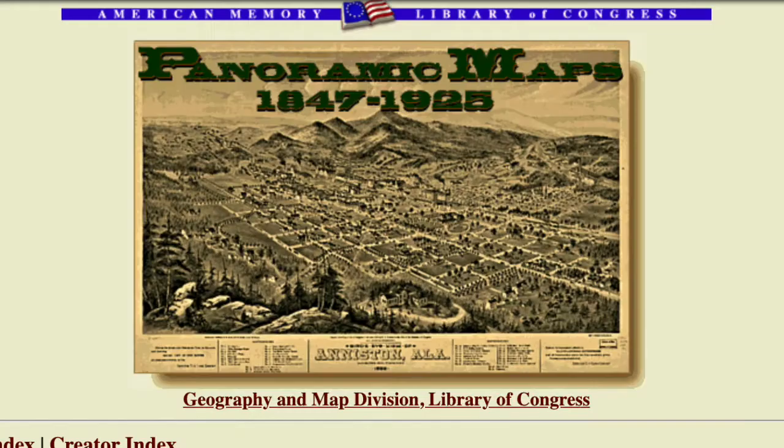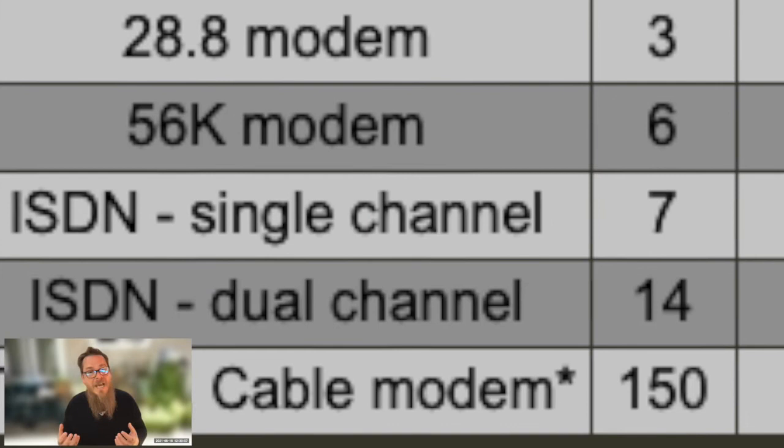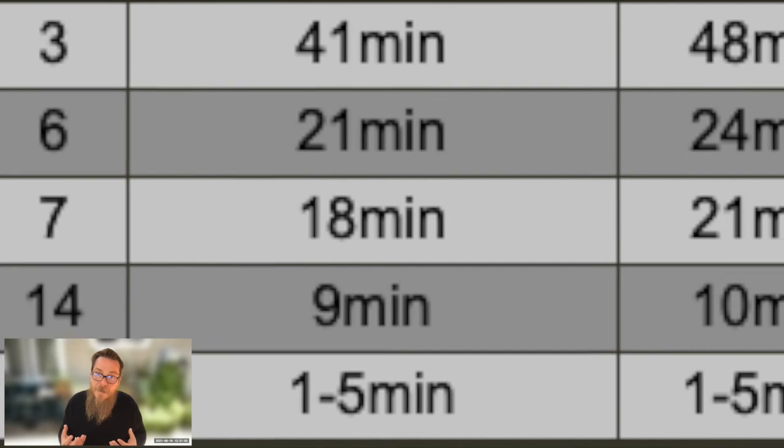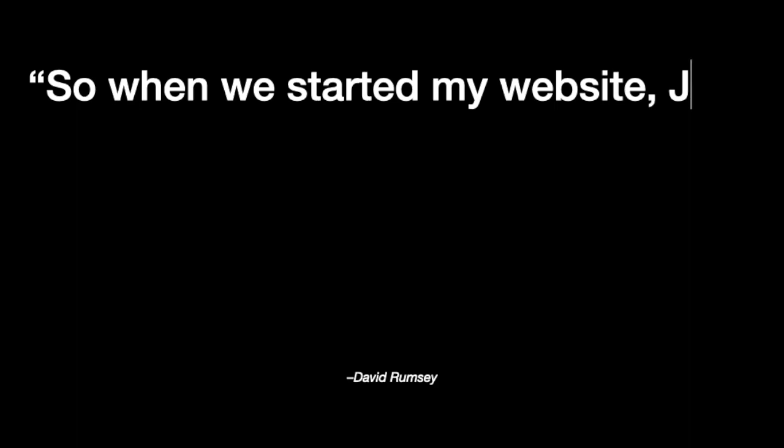Almost as soon as the internet was born and there were browsers available to browse the web, map libraries were scanning high-resolution images of maps and making them available for download online. For the most part, these were just scans made available to download, and they were very large for the download speeds of the time, some of them taking an hour or more to download a single map scan. So when we started my website, Julie Sweetkind Singer and myself, in 1999, we took a lot of heat because our files were too big.